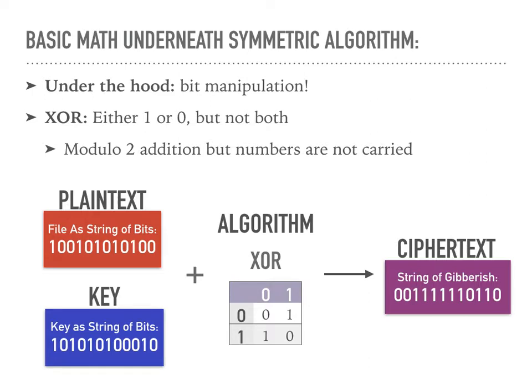So why XOR over AND or just plain OR? It makes sure that the amount of zeros and ones is equally distributed, making it harder to find any patterns. And XOR also makes decryption easy — we just XOR the ciphertext bits and the key bits to get the plaintext back.